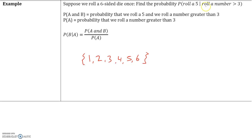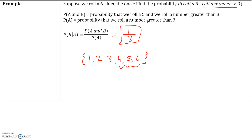This event has already occurred, which means we've already rolled a number greater than three, so our only possibilities are four, five, and six. Our sample space is now reduced to four, five, and six. The probability of rolling a five — there's only one five — so the numerator is one. Event A is rolling a number greater than three: four, five, or six — three outcomes. So the probability of B given A is one over three.